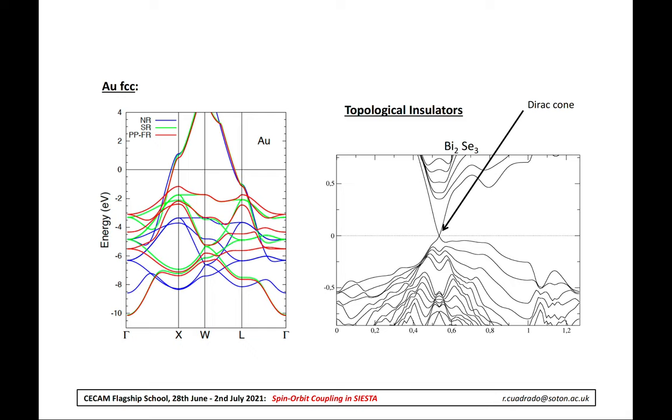From a theoretical point of view, if one includes the spin-orbit in their simulations, one can obtain, for example, the splittings of the band structure that in a common DFT calculation is not possible since without spin-orbit the bands are degenerated, as we can observe in the figure on the left for gold. Also, the bands of any topological insulators can be described correctly as we see on the right side on the slide for bismuth selenide.